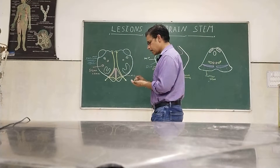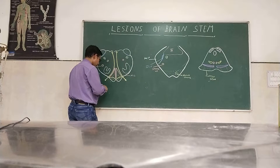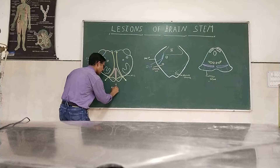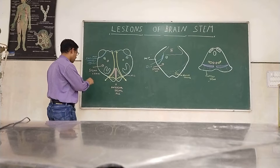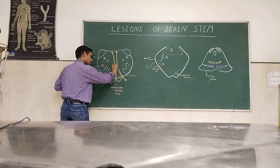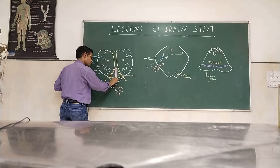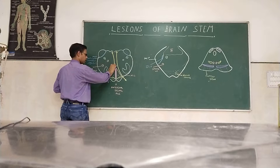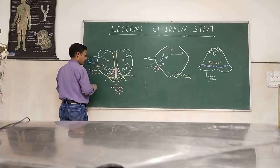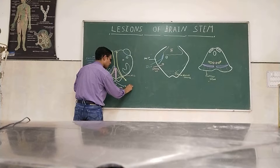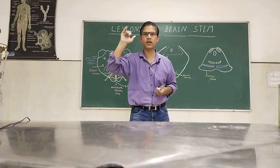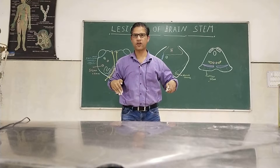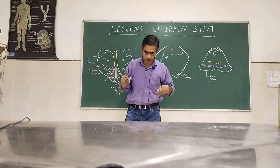First and foremost, the anterior part of the medulla is supplied by the anterior spinal artery. If this part gets damaged — shading this area — number one: the pyramidal or corticospinal tract is damaged. If the lesion is on the right side, the tract crosses contralaterally and supplies the opposite side of the body, resulting in contralateral hemiplegia.